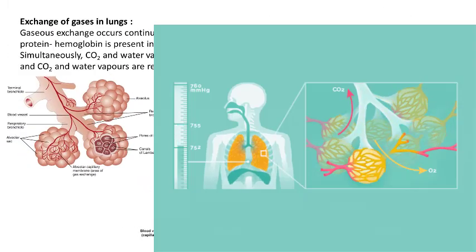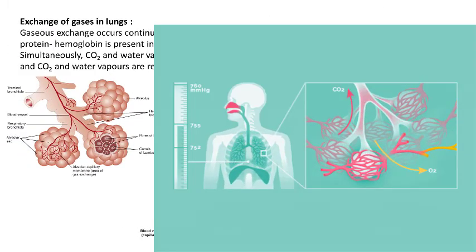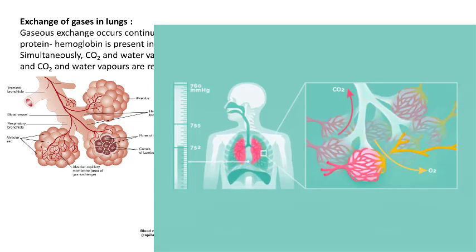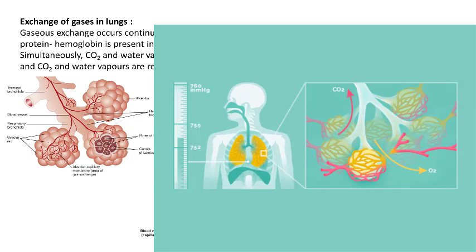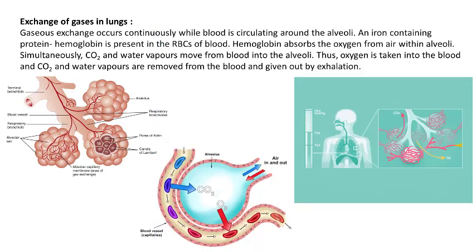The air in the alveoli is now rich in carbon dioxide, which has come from cellular respiration. It also contains some water molecules, as cellular respiration gives out both carbon dioxide and water vapour. When this air is exhaled out through the nose, it is rich in carbon dioxide and water vapour.